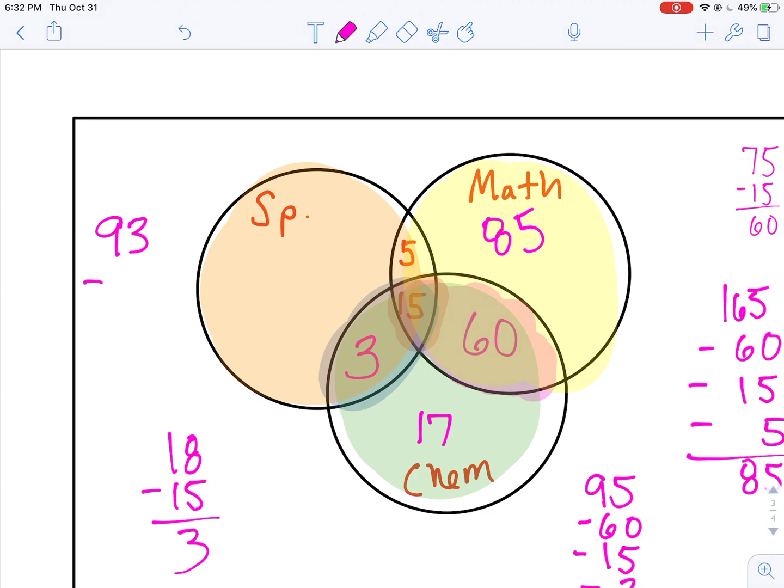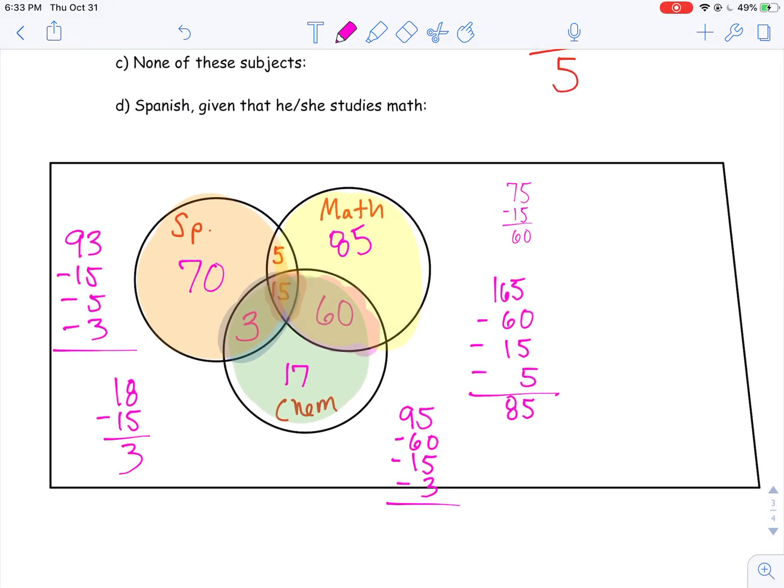So I'm going to do 93. I'm going to take away the 15 who study all three, the 5 who study Spanish and Math, and the 3 who study Spanish and Chemistry. Doing some math here, some subtraction. Again, feel free to do it in your head if you want. I'm doing a calculator and I get 70. So now I filled in all of my circles and all my space.